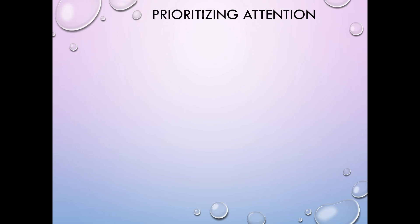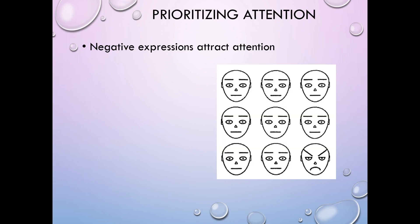What we're talking about is how to prioritize attention — how to maximize noticing things we want to notice and ignore things we don't. Let's talk about the kinds of stimuli that attract our attention. Negative expressions tend to attract our attention. When we look at this picture, the easiest and fastest one to notice is the person in the lower right-hand corner that looks angry. Even though the vast majority of people we're encountering are neutral, that one person with the mad face catches our attention.